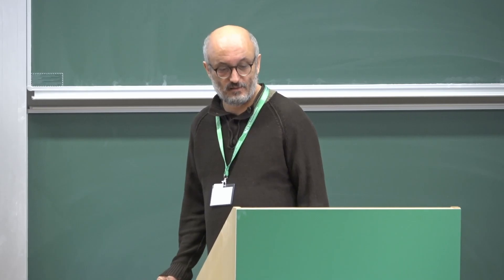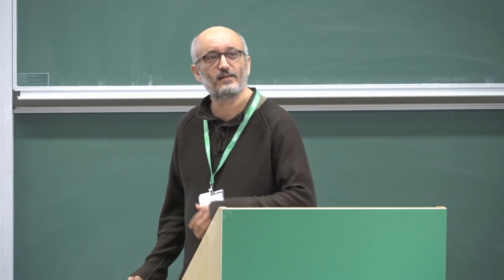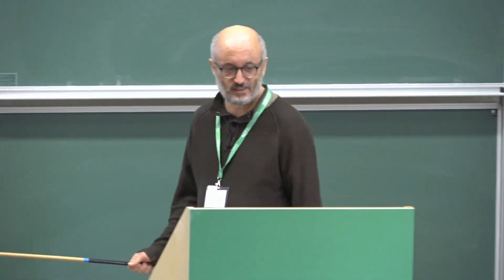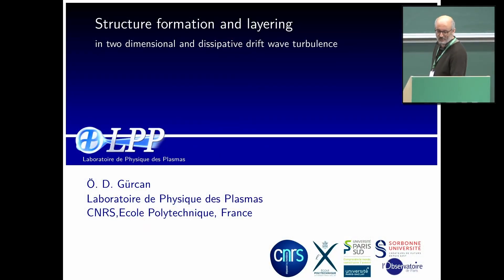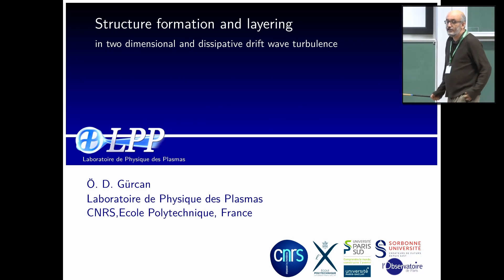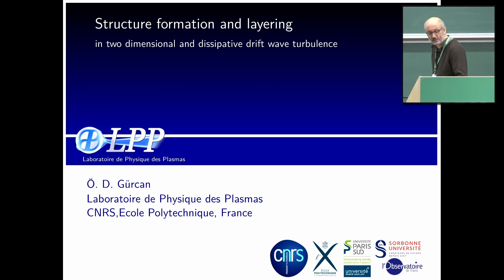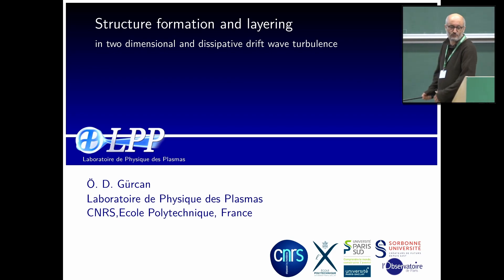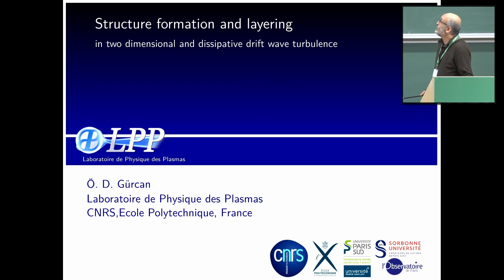I'll be talking about structure formation and layering. I'll try to give you some time to ask me questions. I'll talk about two-dimensional turbulence and dissipative drift wave turbulence. A poor man's way of looking at anti-diffusion is just the inverse cascade with some model for the small scales — doing a closure on a system with inverse cascade gives anti-diffusion in some sense. I'll also talk about dissipative drift wave turbulence because it generates zonal flows, layering, and staircases.